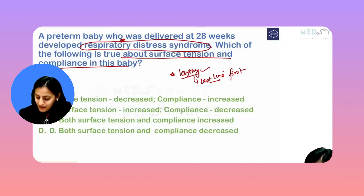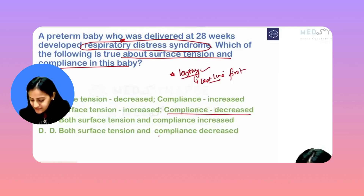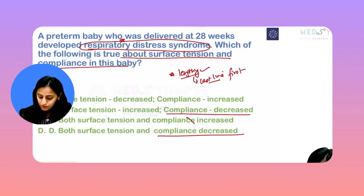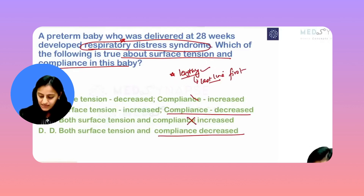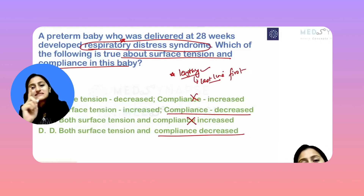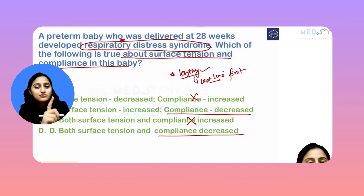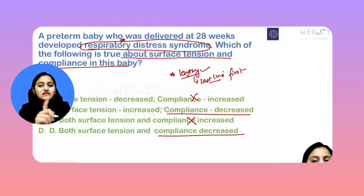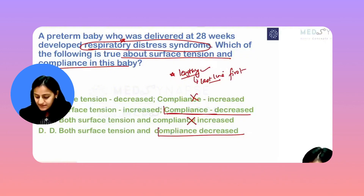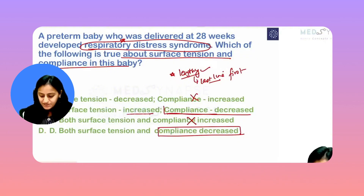The compliance is definitely decreased. So you can rule out options A and C. Ruling out is the main MCQ cheat code you should learn — how do I rule out the options? Compliance is decreased. Now I have to decide whether surface tension is increased or also decreased.